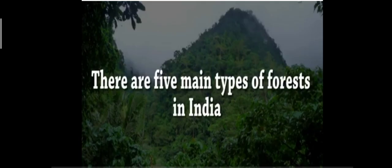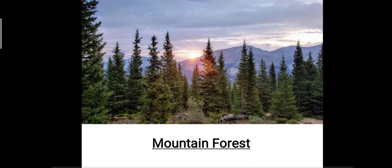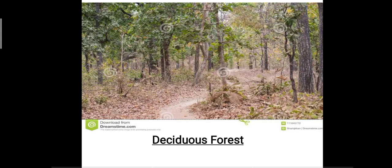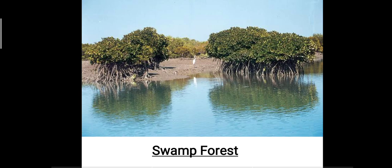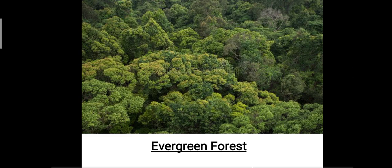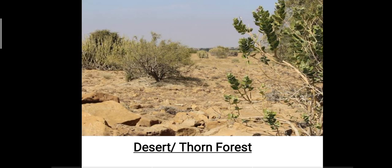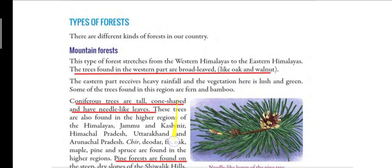In this session we are going to read about the five different types of forest found in India. There are five main types: first is mountain forest, found in the mountainous areas of the Himalayas; second is deciduous forest, which is mostly found in India; then you have swamp forest, evergreen forest, and lastly desert or thorn forest. Today we are going to read about mountain forest and deciduous forest.